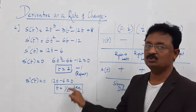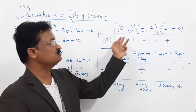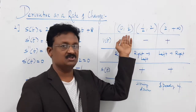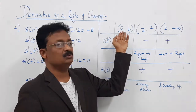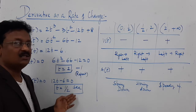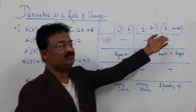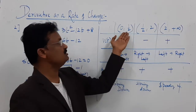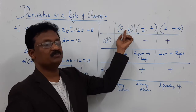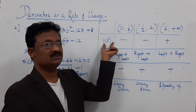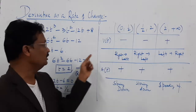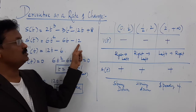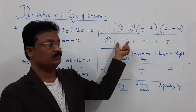Based on these two positive time values, split the interval: 0 to 0.5, 0.5 to 2, and 2 to positive infinity. Take a value from the first interval — say t = 0.25 — and apply it in the velocity formula: 6(0.25)² − 6(0.25) − 12 gives a negative result. For the interval 0.5 to 2, try t = 1: 6(1) − 6(1) − 12 = −12, which is negative.